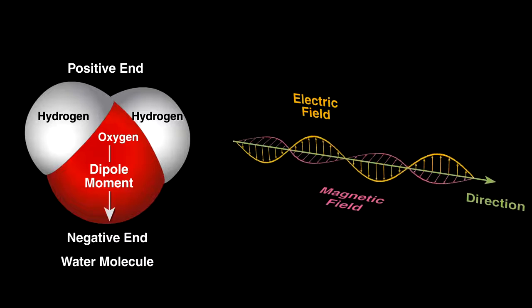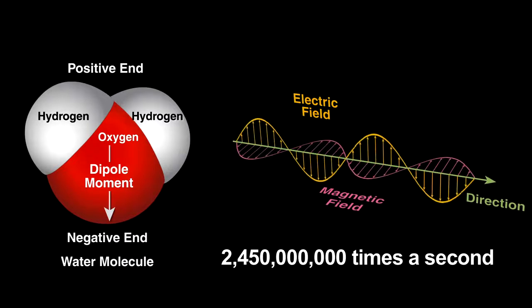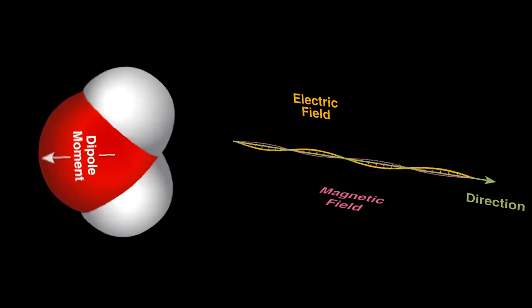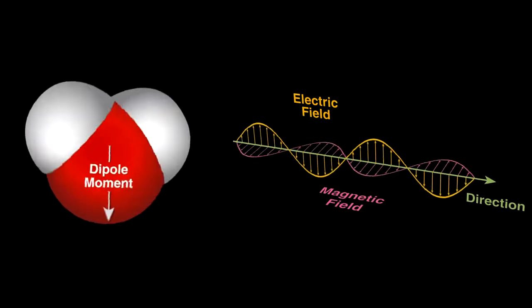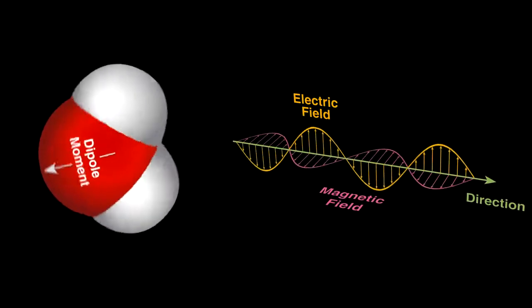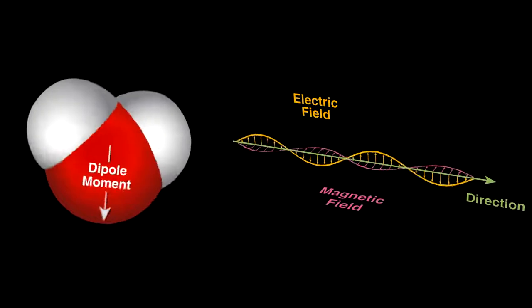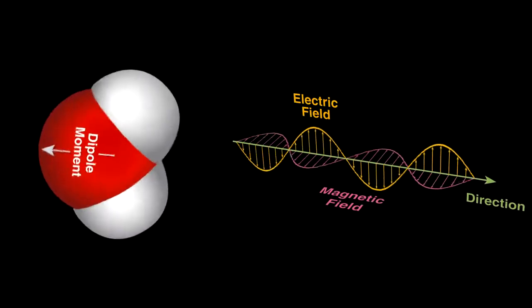For this oven, the direction of the fields change 2.45 billion times per second. Water will try to align with the radiation's electric field. The changing field rocks the water molecules back and forth rapidly, and molecular friction from this creates heat as the motion disrupts the hydrogen bonds between neighboring water molecules.